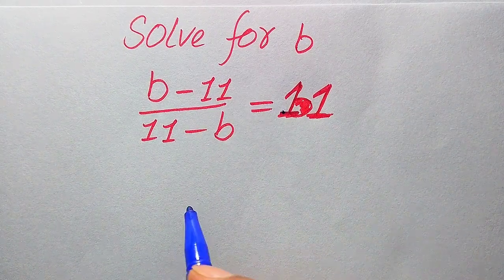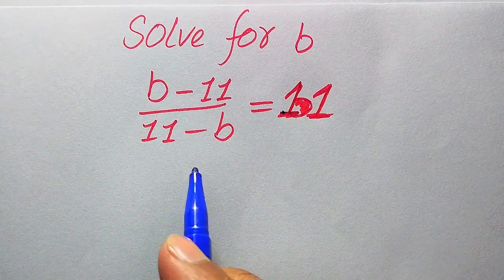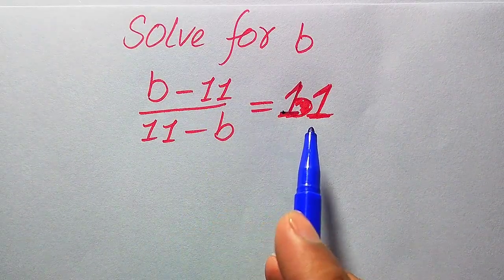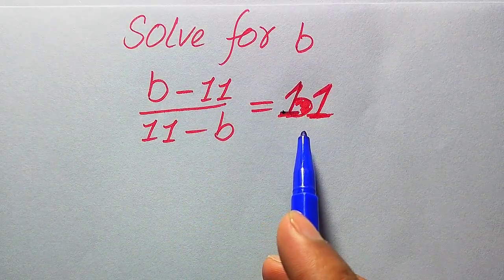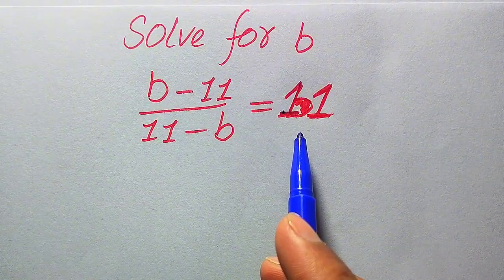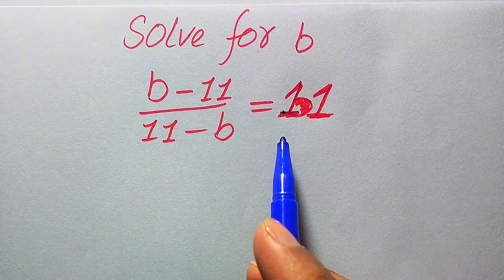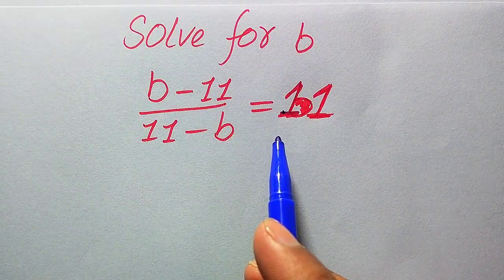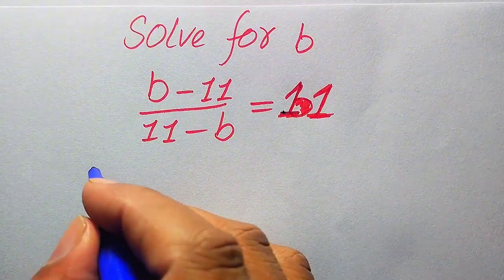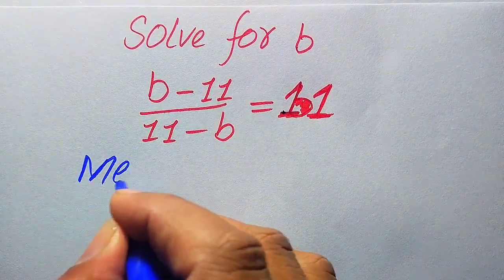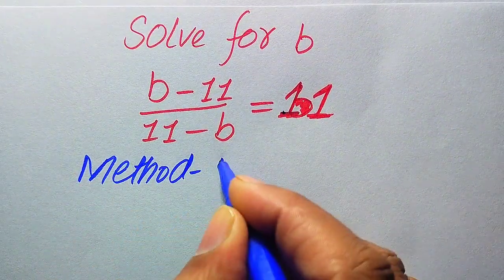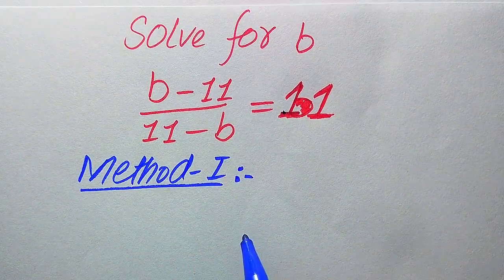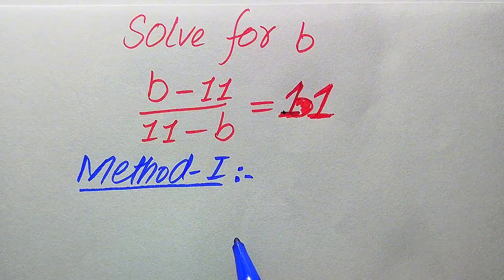Hello everyone, welcome. We solve this math olympiad algebra problem: (b minus 11) divided by (11 minus b) equals 11. We solve for all values of b. First we find all the roots of this equation, then we verify which roots are solutions and which are extraneous. We solve this problem using two methods.